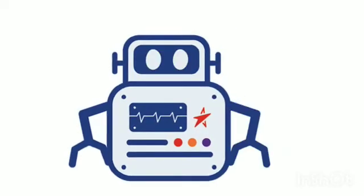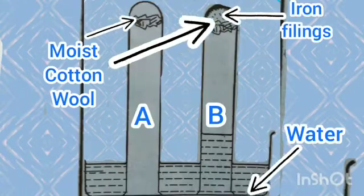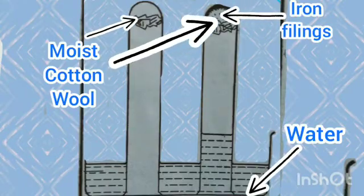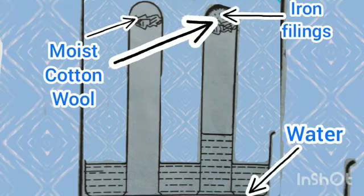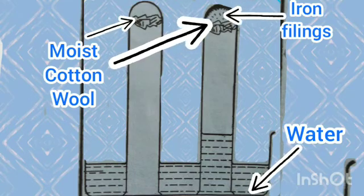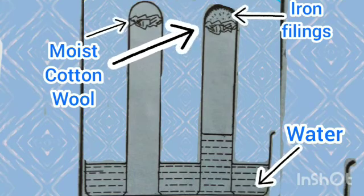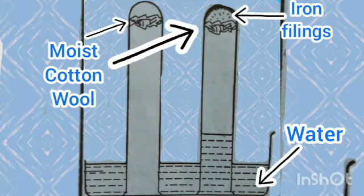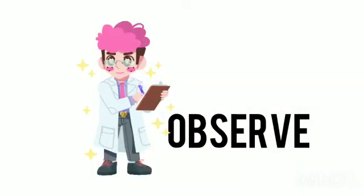Let's try another experiment too. Take two test tubes and name them A and B. Now, trap some moist cotton wool into test tube A and some iron fillings and moist cotton wool in test tube B. Fill the beaker with water and dip the test tubes upside down in that beaker. Observe after few days.